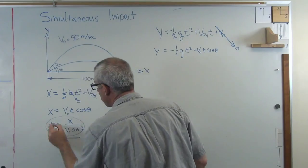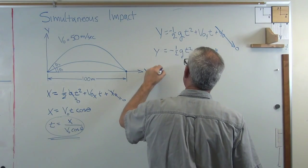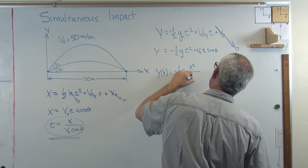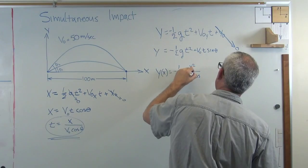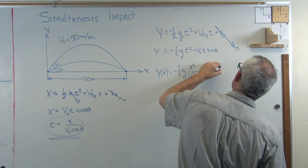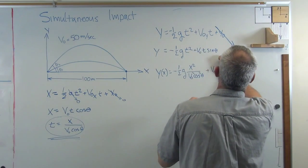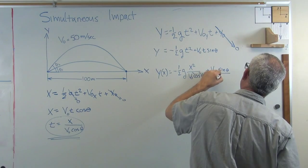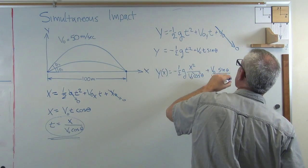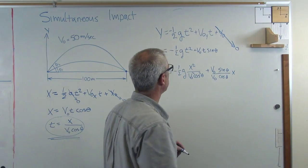So what I'm going to do is take this expression right here. Everywhere up here I see a t, I'm going to plug that in. And when I do that, I get y as a function of x: -½gx²/(v₀² cosine² theta) plus v₀... So there's an x there. All right, so there we go.